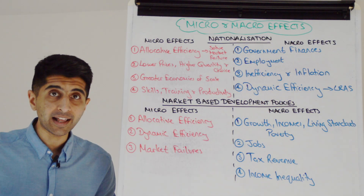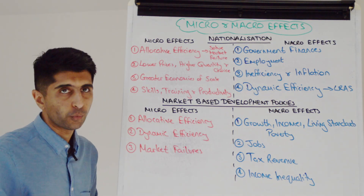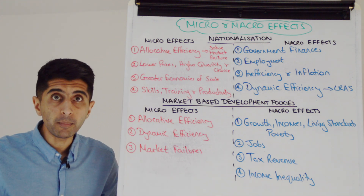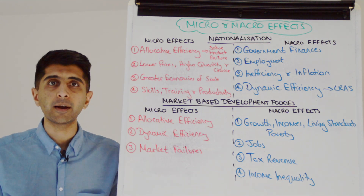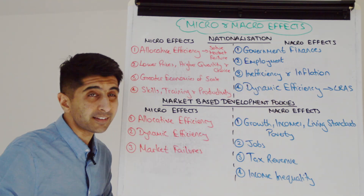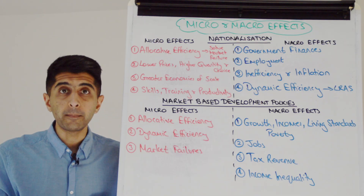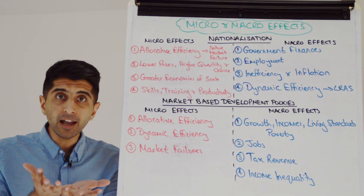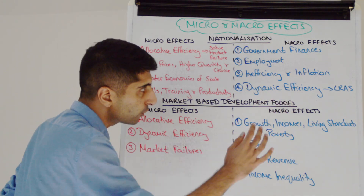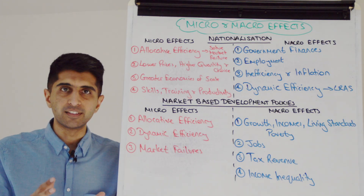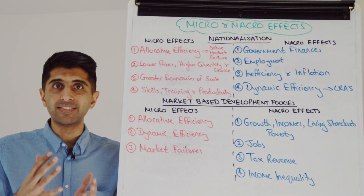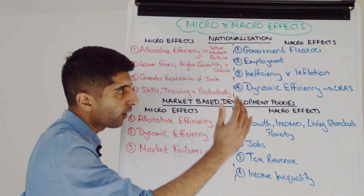What about the macro effects of nationalization? We can talk about the hit to government finances — the cost of running these public services or whatever that state-run company might be — linking that to a worsening budget deficit and rising national debt. We can talk about greater employment, since the state is not a profit-maximizing employer and may well employ more workers than in a privatized industry. We can talk about the potential inefficiencies of a nationalized firm because they're not profit-motivated — there might actually be higher prices, which we can link to higher inflation if we see nationalization across a large number of industries. We can also talk about the lack of dynamic efficiency, as these firms may hold back on reinvestment and thus restrain long-term economic growth and LRAS increases over time.